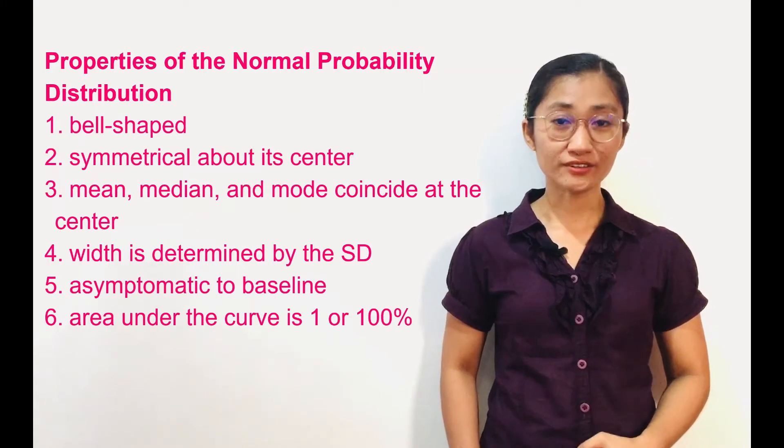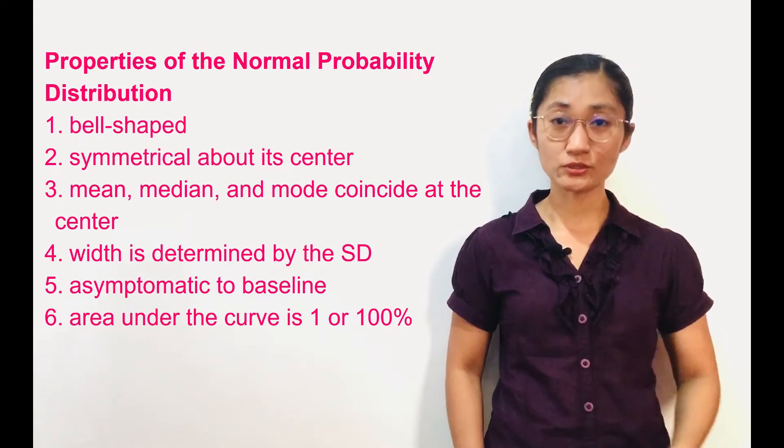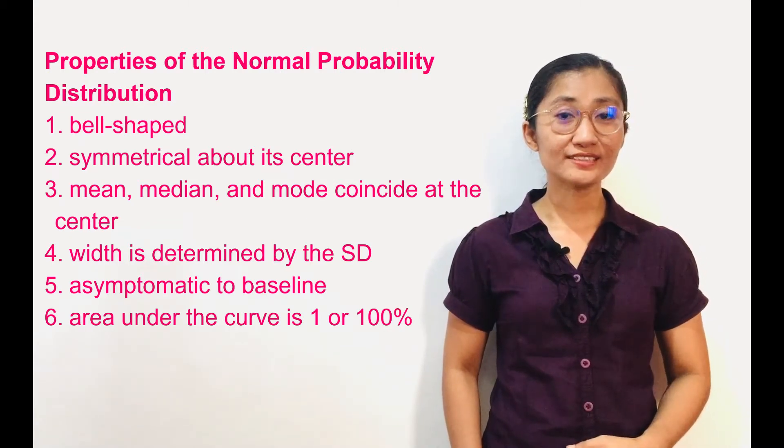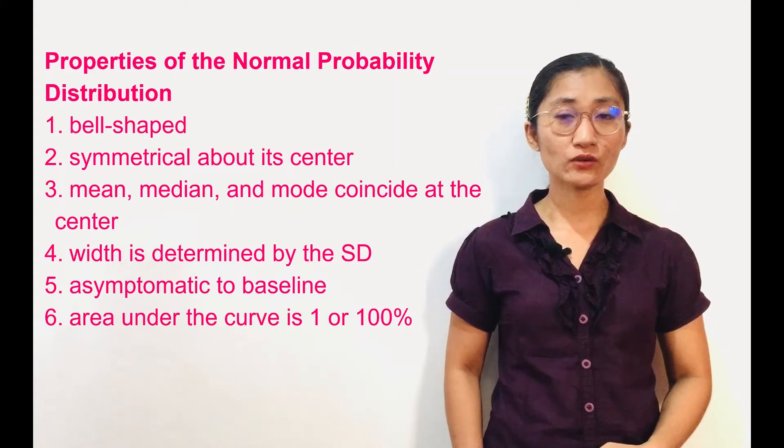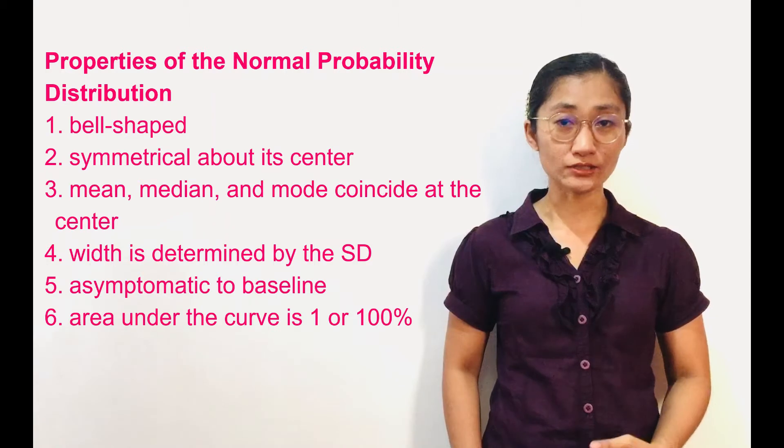The width of the curve is determined by the standard deviation of the distribution. The curve is asymptotic to the baseline or to the x-axis, which means the graph does not touch the x-axis.